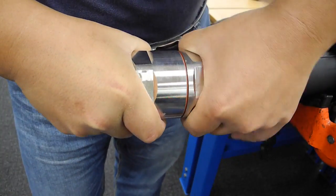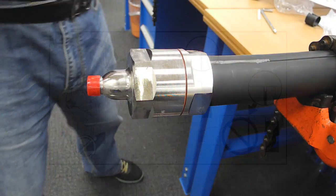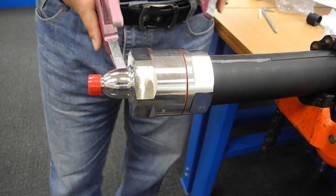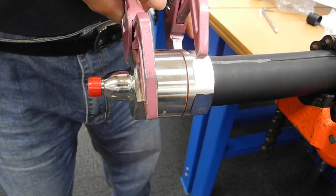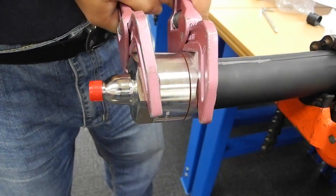Hold the connector body in place and screw the clamping nut onto the connector body. Tighten using two adjustable wrenches and keeping the connector body in place. Be careful not to over tighten the assembly.